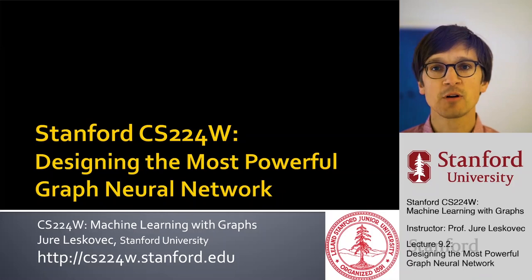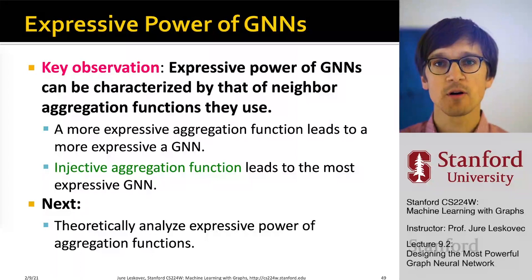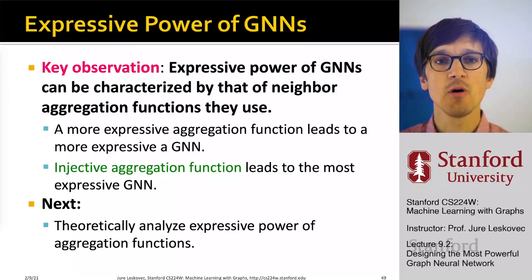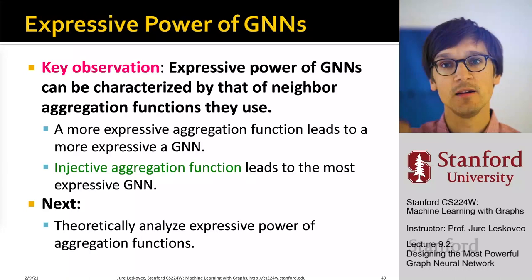Given the insight so far, let's now go and design the most powerful graph neural network — the most expressive GNN — and develop the theory that will allow us to do that. The key observation is that the expressive power of a GNN can be characterized by the expressive power of the neighborhood aggregation function it uses. If the neighborhood aggregation is injective, this leads to the most expressive GNN.